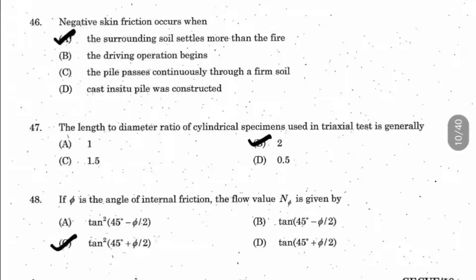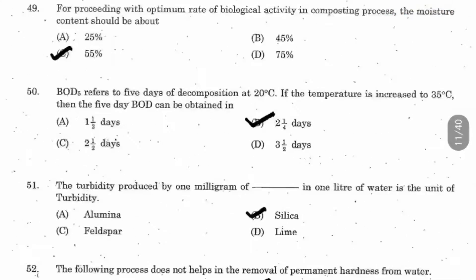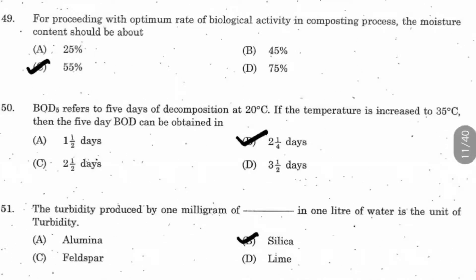Question 48: If phi is the angle of internal friction, the flow value N phi is given by what? Tan square of 45 plus phi by 2. Question 49: For proceeding with optimum rate of biological activity in composting process, the moisture content should be about what? When composting occurs, moisture content of 55 percentage gives optimum rate of biological activity, making the composition process easier. So the answer is 55 percentage.